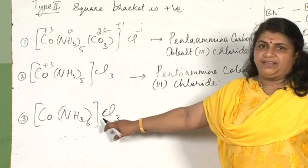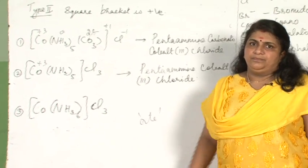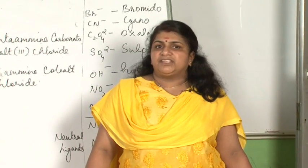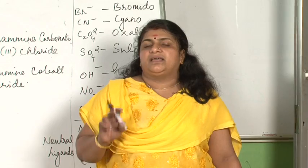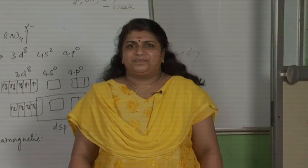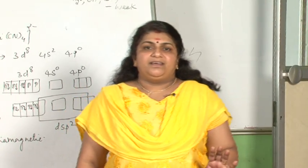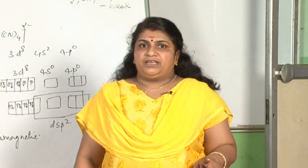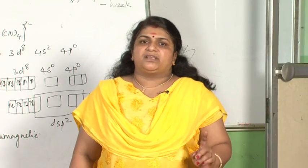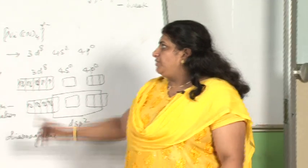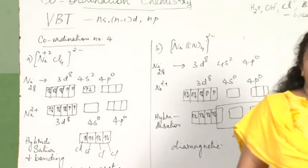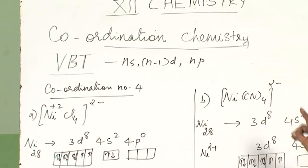The remaining compounds are your homework. Your textbook has many in-text questions in this chapter — go through them and attempt them at home. Isomerism — structural isomerism and stereoisomerism — is covered in detail in the textbook. Now we come to valence bond theory, which gives an idea about how complexes are formed.